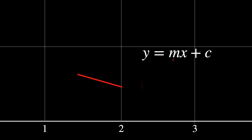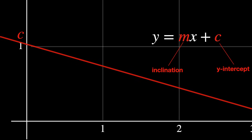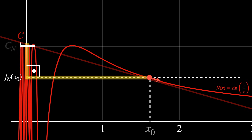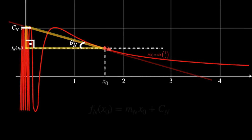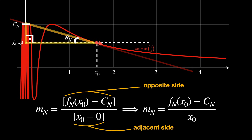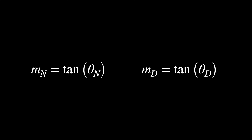The equation of a line is defined by two parameters, usually denoted as m and c, representing the inclination of the line and the point at which the line crosses the y-axis, respectively. Looking closely at the numerator's tangent line, there is a right triangle, which lets us conclude that the inclination Mn is the opposite side of the triangle with respect to theta n divided by the adjacent side — in other words, the side that touches the angle. In math, the name for this fraction is the tangent of the angle, a trigonometric function: Mn equals tan of theta n. Similarly, with the denominator, Md equals tan of theta d.